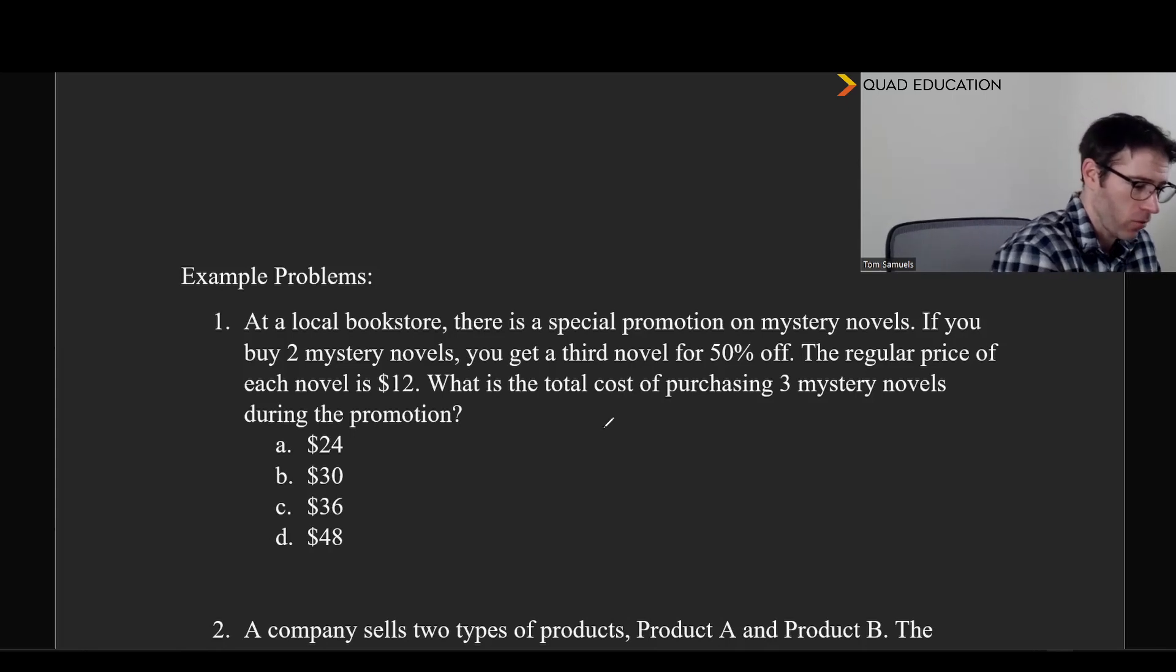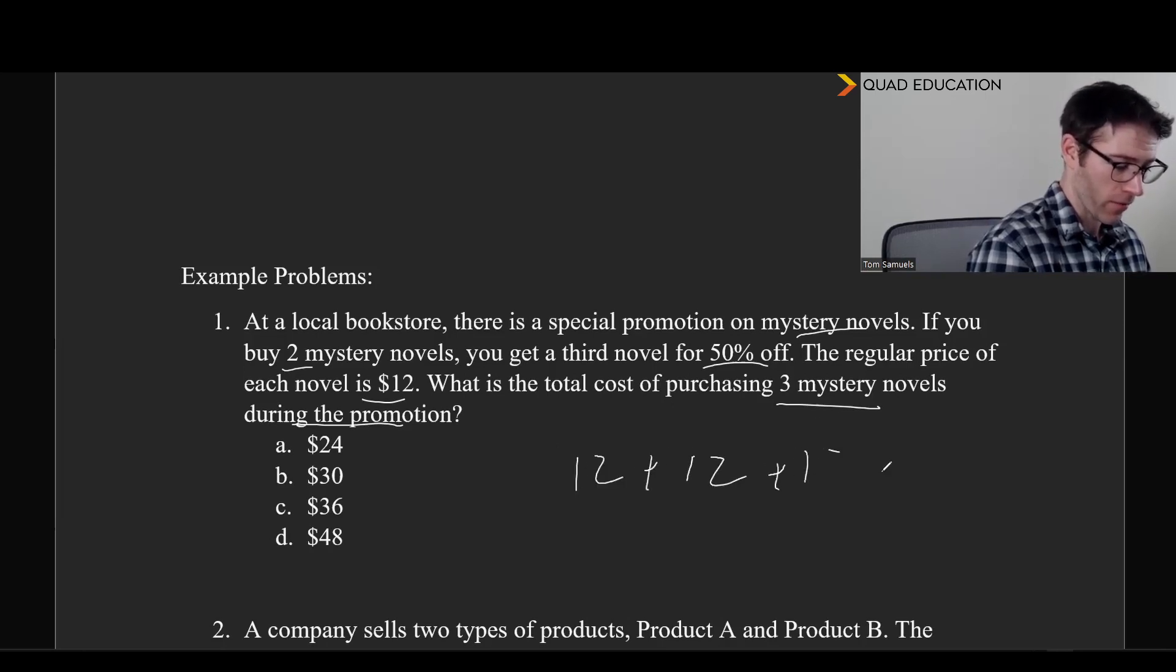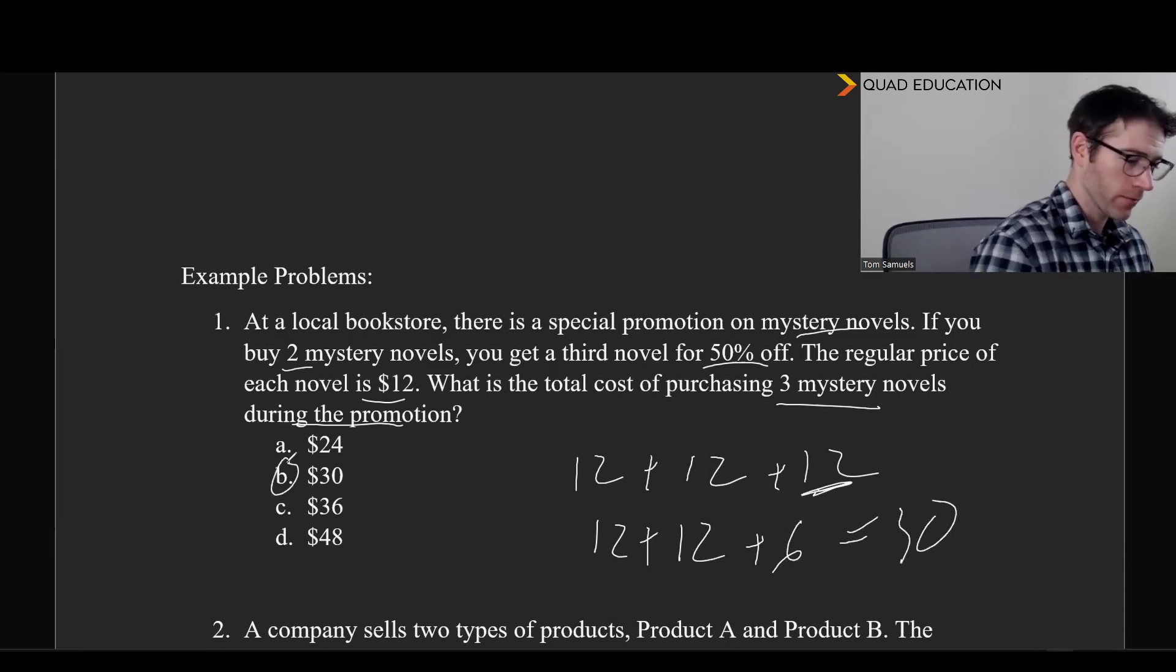Okay. Let's take a look. So, going to the end here. What is the total cost of purchasing three mystery novels during the promotion? So, we're buying some books. And, looking at the question itself… So, at a local bookstore, there is a special promotion on mystery novels. If you buy two mystery novels, you get a third mystery novel for 50% off. Regular price of each novel is $12. So, pretty straightforward here. We have novel, novel, novel. So, if there was no promotion, it would be 12 and 12 and 12. But, one of these right here is 50% off. So, that one's going to be 6. And so, 12 plus 12 is 24. 24 plus 6 is 30. So, pretty easy one here. Maybe the next one here is going to be a little bit more challenging.